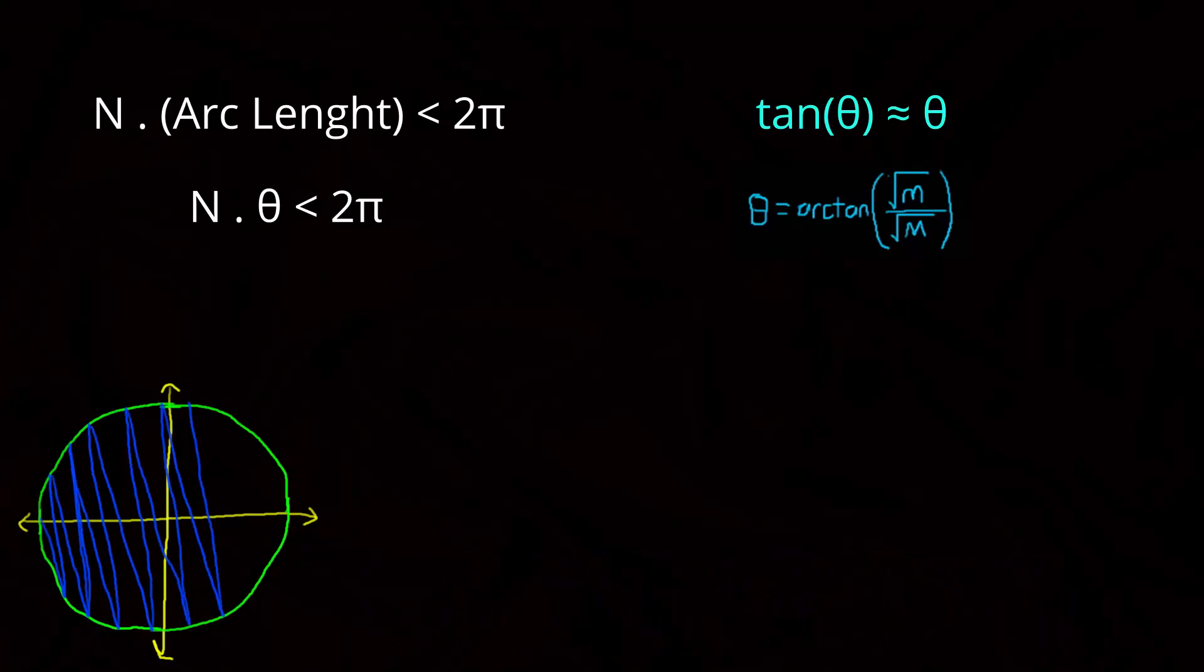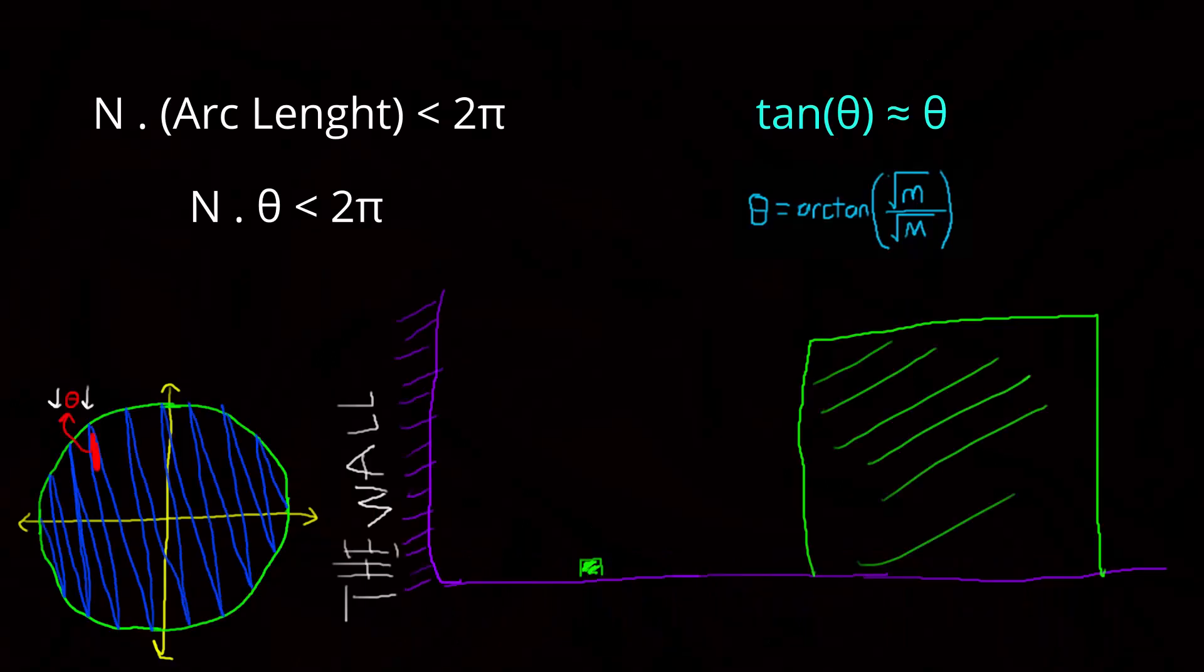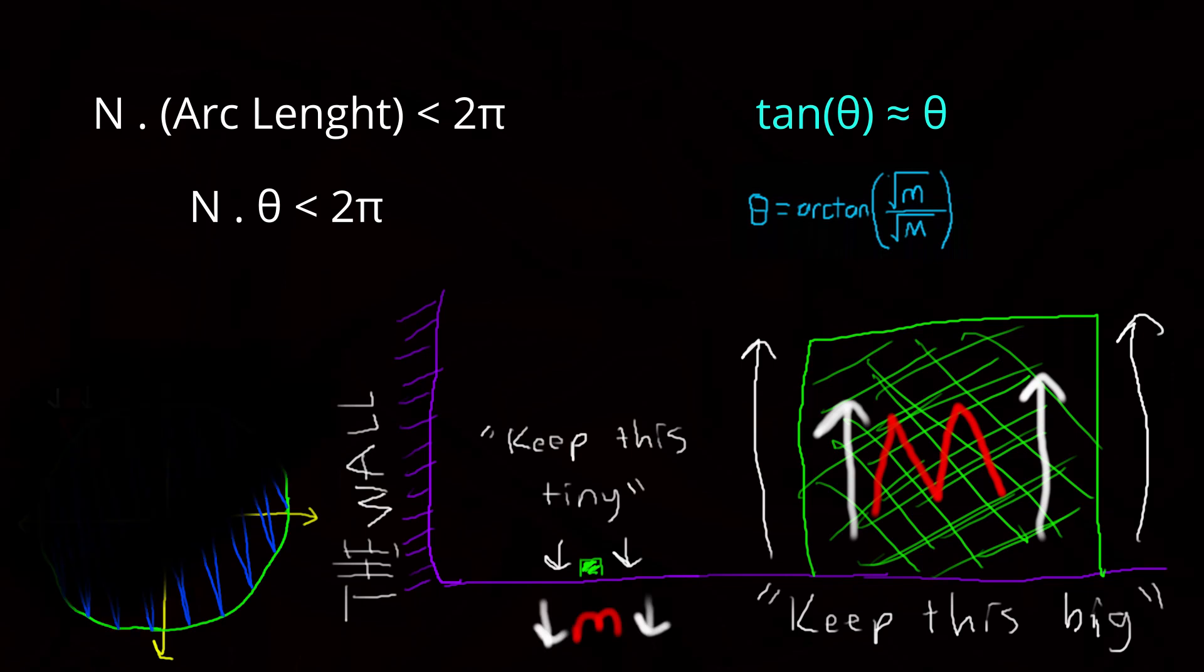So if you keep θ as tiny as possible, in other words M as big as possible, more decimals you can discover.